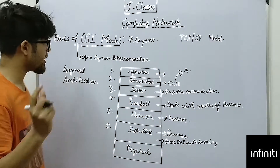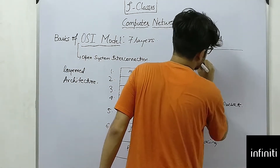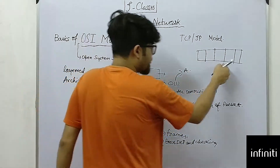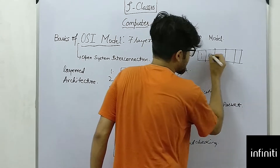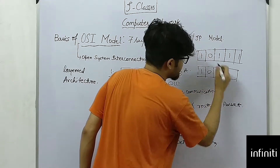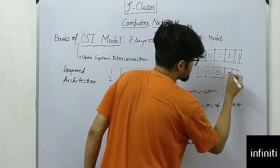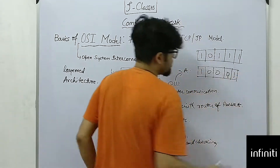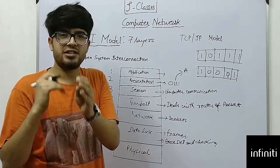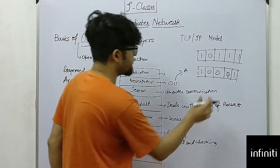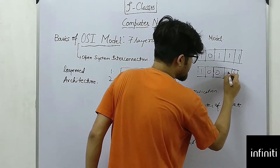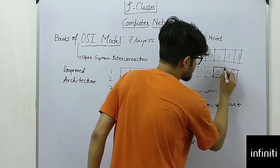The data link layer sends data in the form of frames. Frames are collections of bits. There can be errors while sending data — for example, a bit sequence like '1011' may get transformed during transmission. There are different types of errors: single-bit error, multi-bit error, and a special type of multi-bit error called a burst error, where errors happen together or in scattered positions across the data.